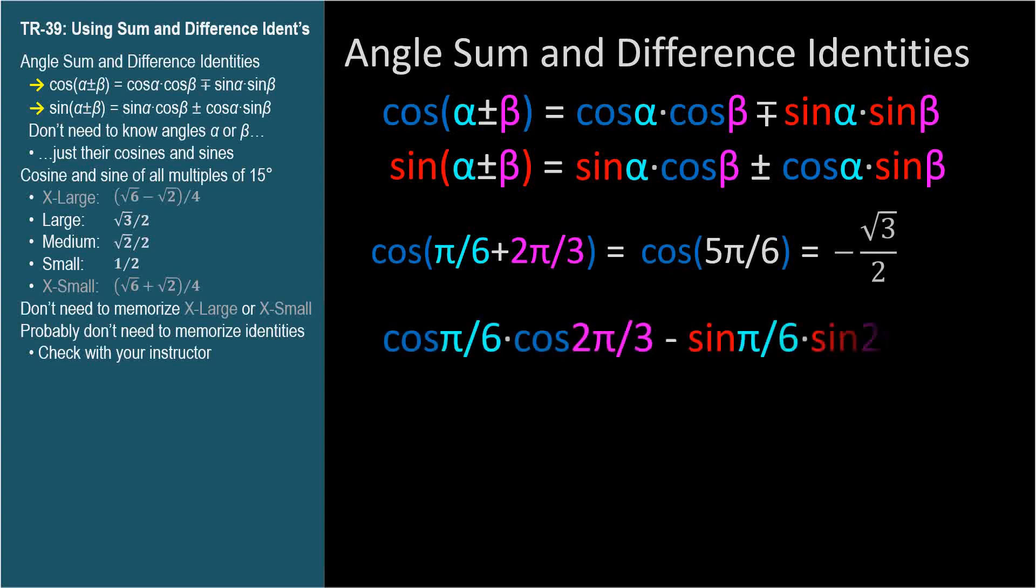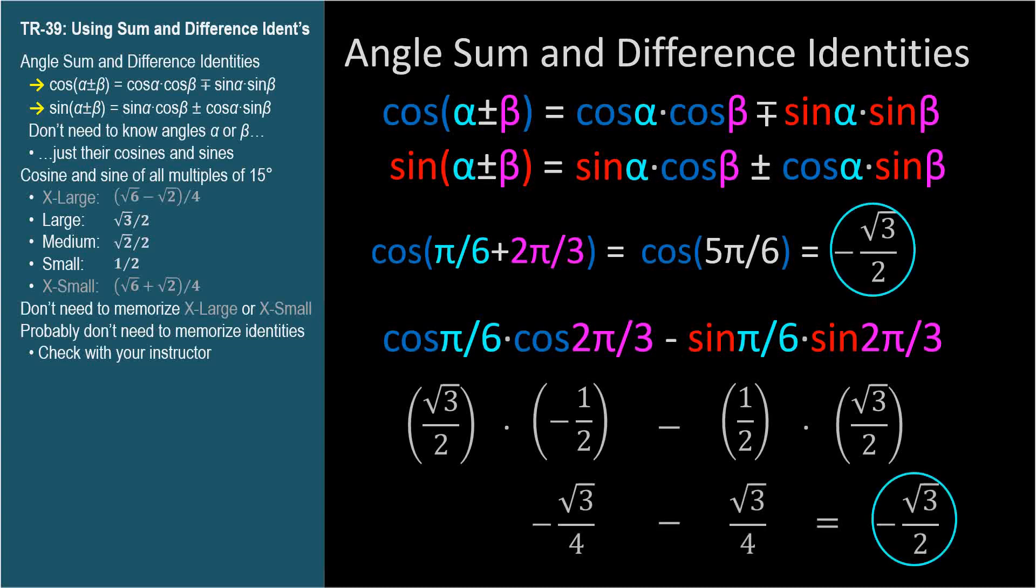We'll use this identity and plug in the terms. Let's evaluate the trig functions one at a time. Cosine π/6 is √3/2. Cosine 2π/3 is negative 1/2. Sine π/6 is 1/2, and we're subtracting this expression. Sine 2π/3 is √3/2. If you don't know these values, see TR-15. Multiplying and simplifying yields negative √3/2, which is what we expected.